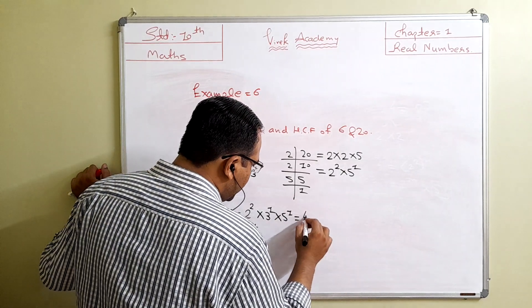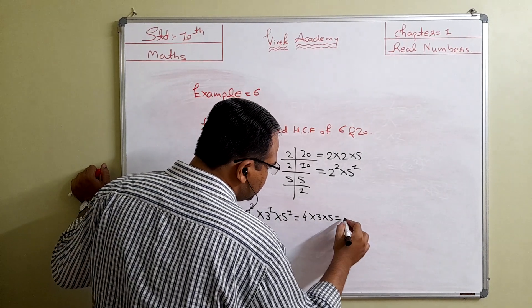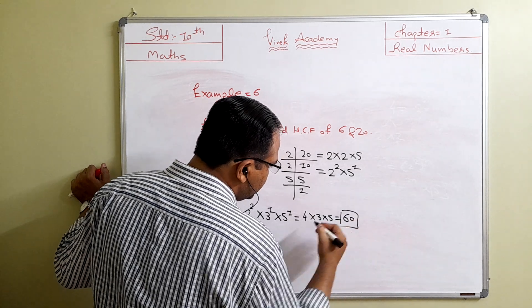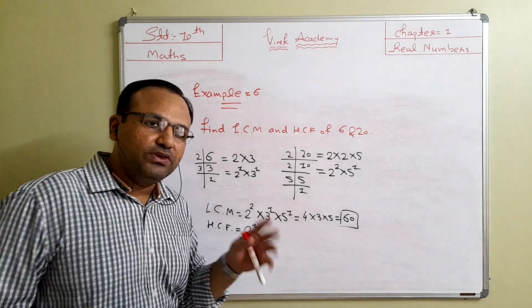So the answer is 4 times 3 times 5, which equals 60. So LCM is 60 and HCF is 2. Thank you.